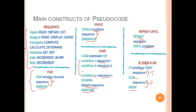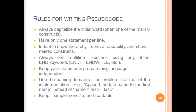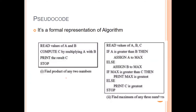Here is a simple pseudocode example — the product of two numbers. START. Read values of A and B. Compute C by multiplying A and B. Print the result C. STOP. Keywords like START, READ, COMPUTE, PRINT, and STOP are written in uppercase. You can use START if necessary, and STOP as the last statement.